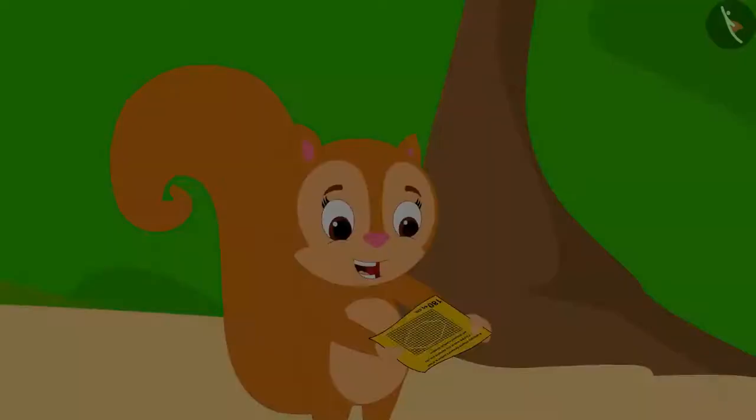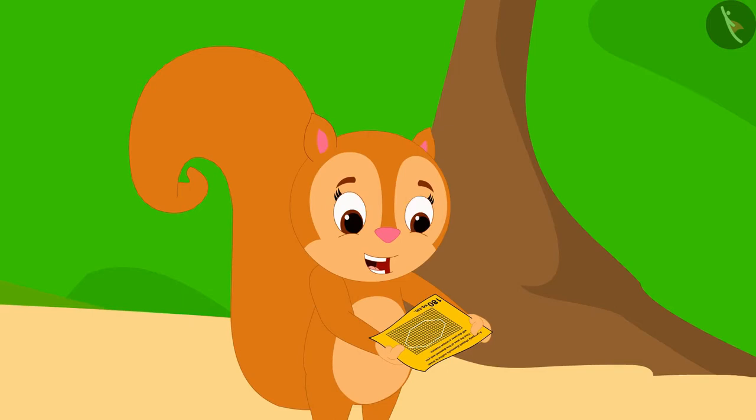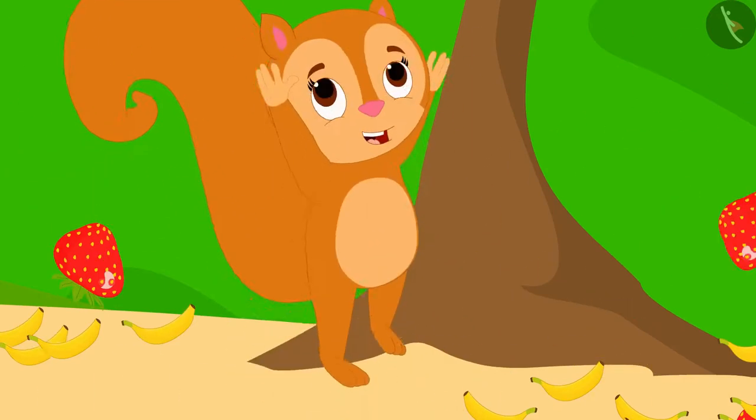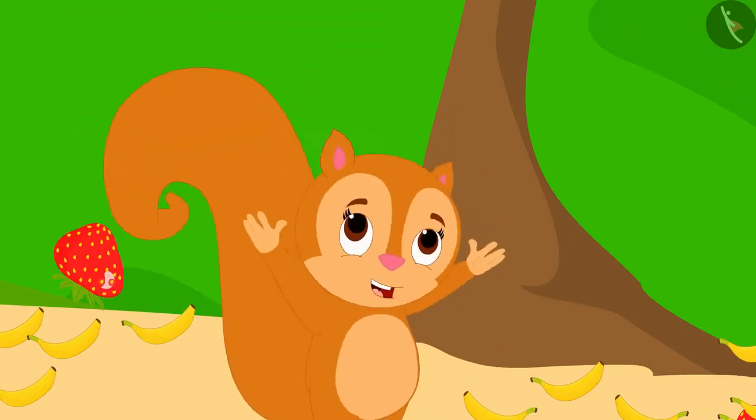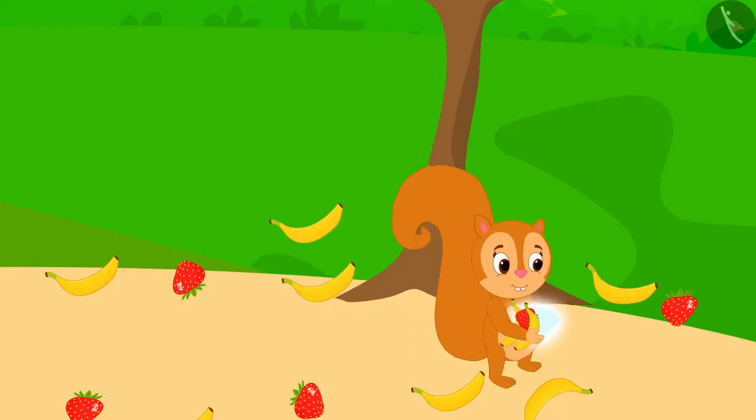This time, as soon as Chanda wrote this answer on that paper, the paper disappeared and fruits began to shower from the sky. Chanda became very happy. She gathered some fruits and then took her diamond and happily walked towards her house.